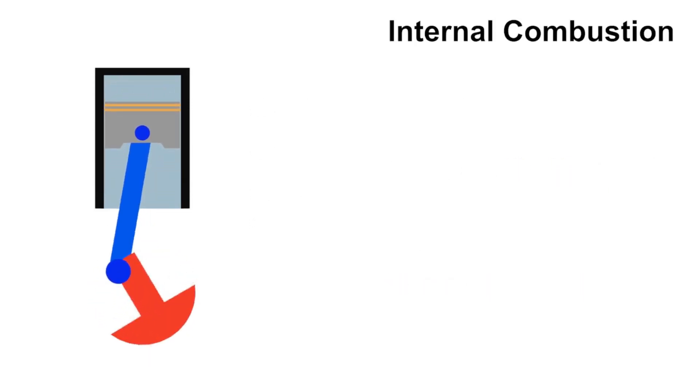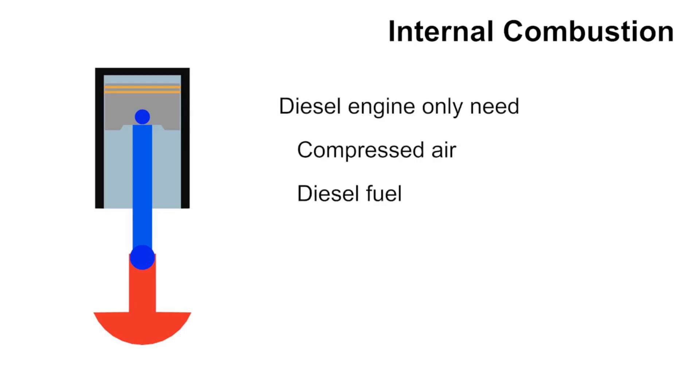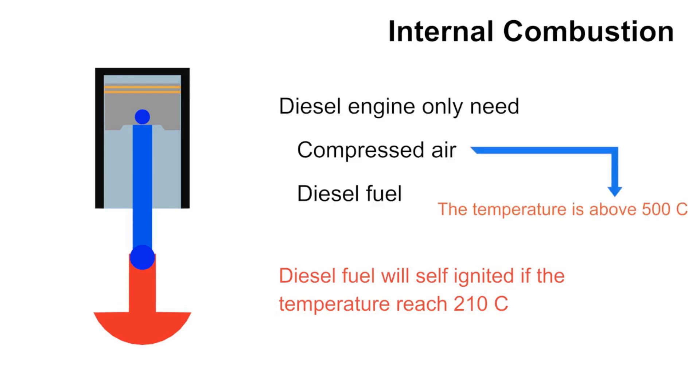How about a diesel engine? The diesel engine only needs air and diesel fuel without a fire spark. The reason, diesel fuel will automatically burn when it is at 210 degrees Celsius. This happens because the air temperature in the cylinder will be increased to 500 degrees Celsius. This exceeds the flashpoint of diesel fuel, so the fuel will burn immediately without triggering. For detail, see the following animation.